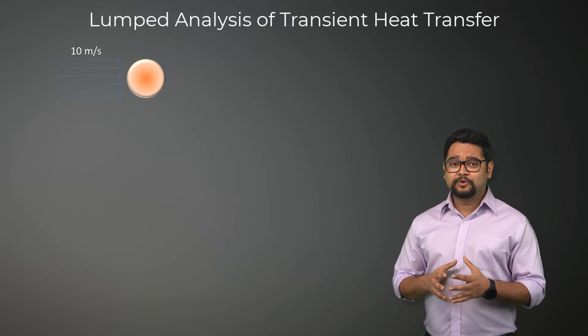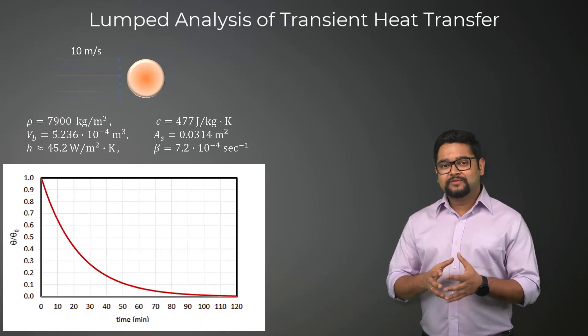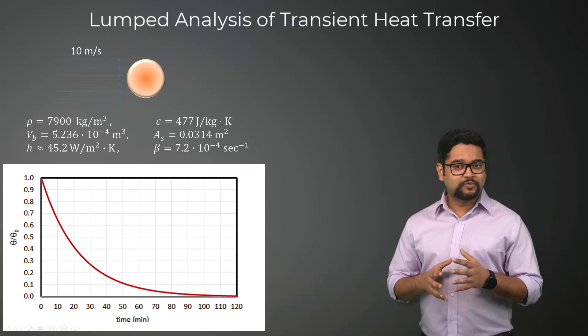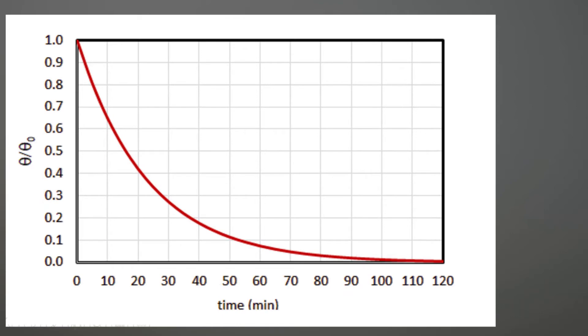Let's consider a stainless steel sphere of 0.1 meter diameter in a turbulent airflow of 10 meters per second. Using these material properties, we can compute beta and this would give us the following variation of temperature over time. We can see that for this case, the lump model predicts that it will take about 2 hours to cool the sphere to within 1% of the ambient temperature.